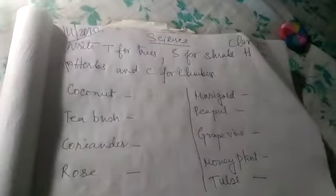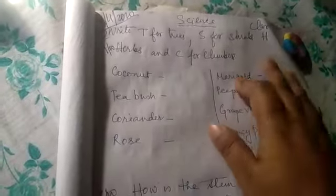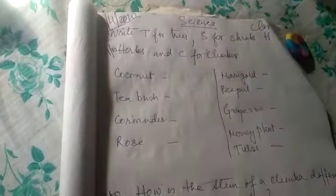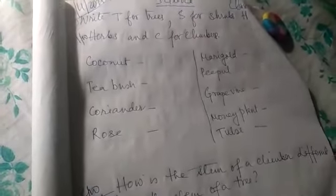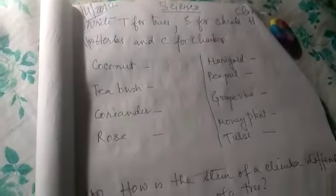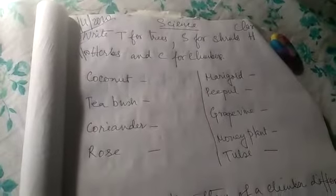Class 2 Science. Today's date is 11/4/2020. You have to write: T for Trees, S for Shrubs, H for Herbs, and C for Climbers.